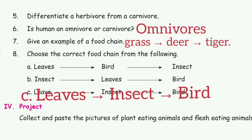Sixth question: is a human a herbivore or carnivore? The answer is omnivore. Seventh question: give an example of a food chain. The answer is: grass → deer → tiger.